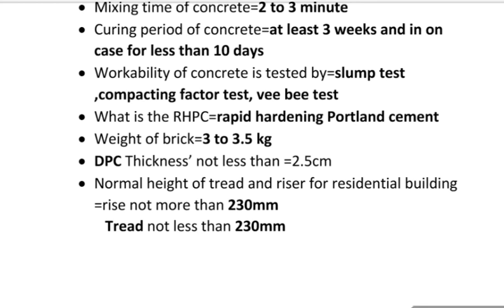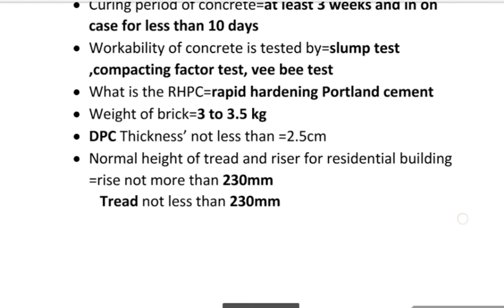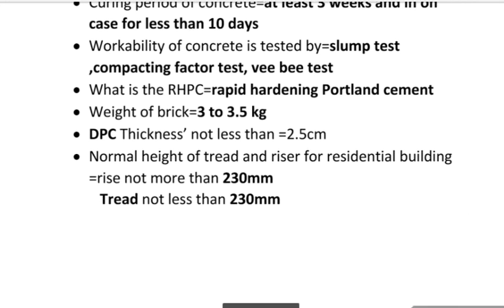Next, RHPC means Rapid Hardening Portland Cement. Next, weight of brick is 3 to 3.5 kg. DPC thickness is not less than 2.5 cm. Normal height of thread and riser for a residential building: riser not more than 230 mm and thread not less than 230 mm.